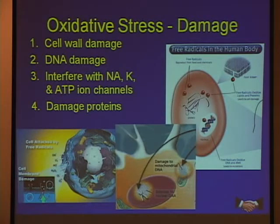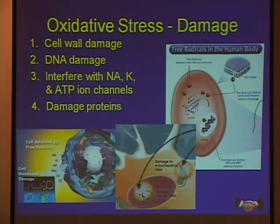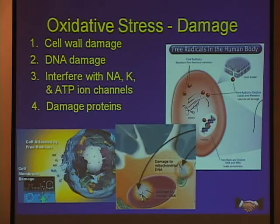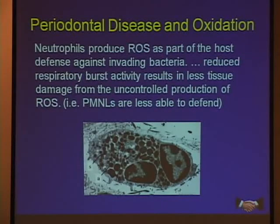I can also denature proteins and cause them to change their shape, and now they don't function the way they were supposed to or the way they were built. That's what biological rusting does — by creating these unstable things.